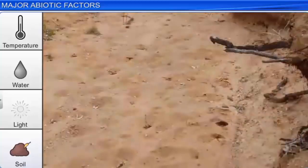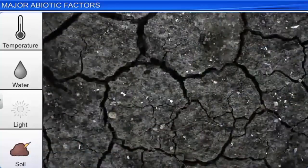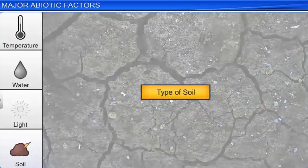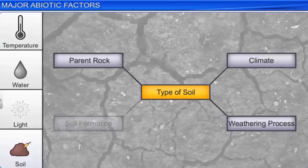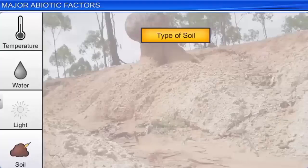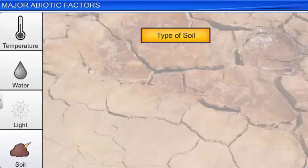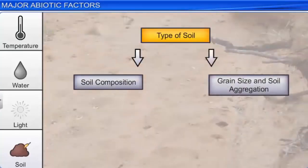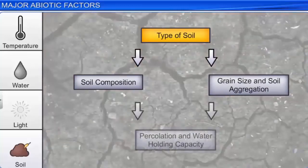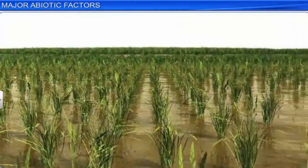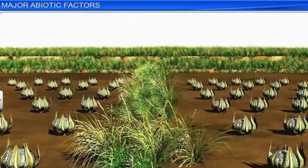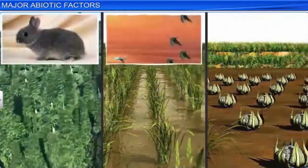On earth, the nature and properties of soil vary in different places. The type of soil depends on the parent rock, climate, weathering process, how the soil is formed, and whether the soil is transported or sedimentary. Various soil characteristics such as composition, grain size, and soil aggregation determine its percolation and capacity to hold water. Characteristics such as pH and mineral composition of the soil, and the topography of the place, greatly influence vegetation, which in turn determines the animals that can survive in that place.